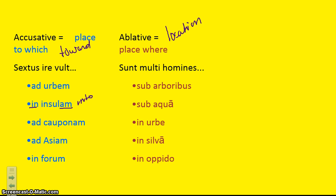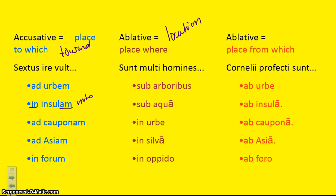The other use of the ablative is when we show place from which, which basically shows motion away. Here we have an example: 'Cornelii profecti sunt', and we use the preposition 'ab'. So the Cornelii set out from the city 'ab urbe', from the apartment 'ab insula', from the inn 'ab capona', from Asia 'ab Asia', from the forum 'ab foro'. Note that 'ex' and 'de' will also work the same way for prepositional phrases showing place from which, which is away.